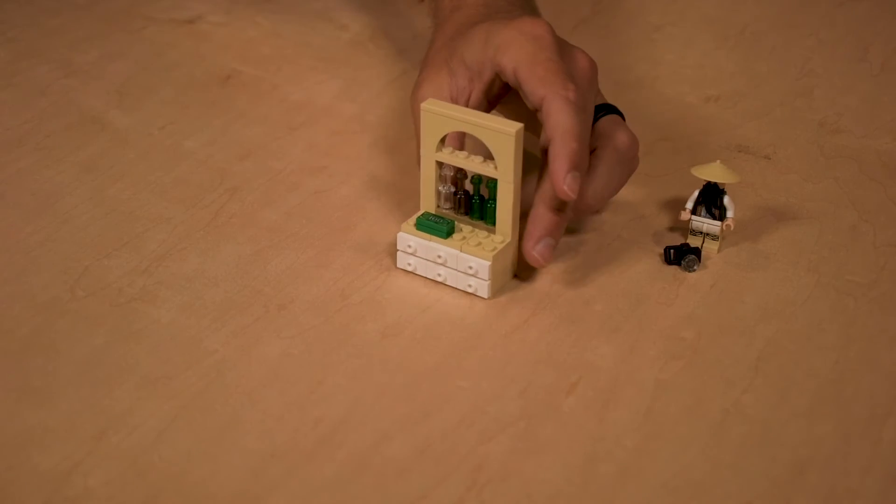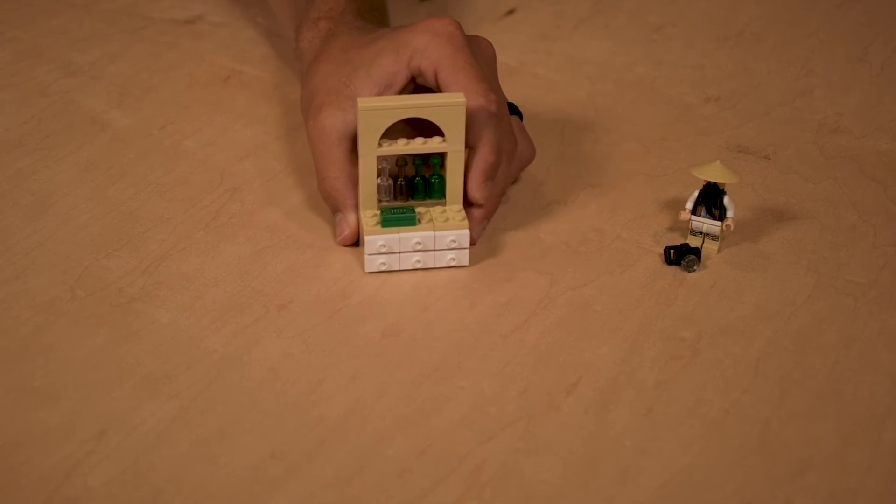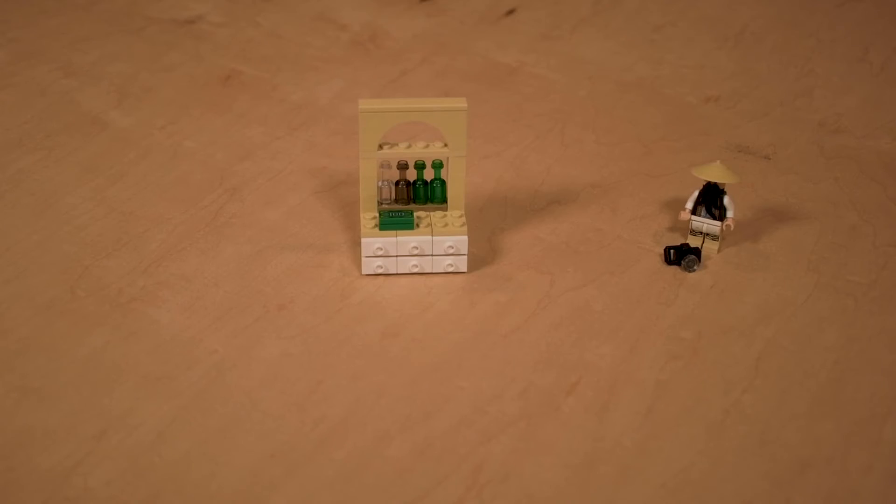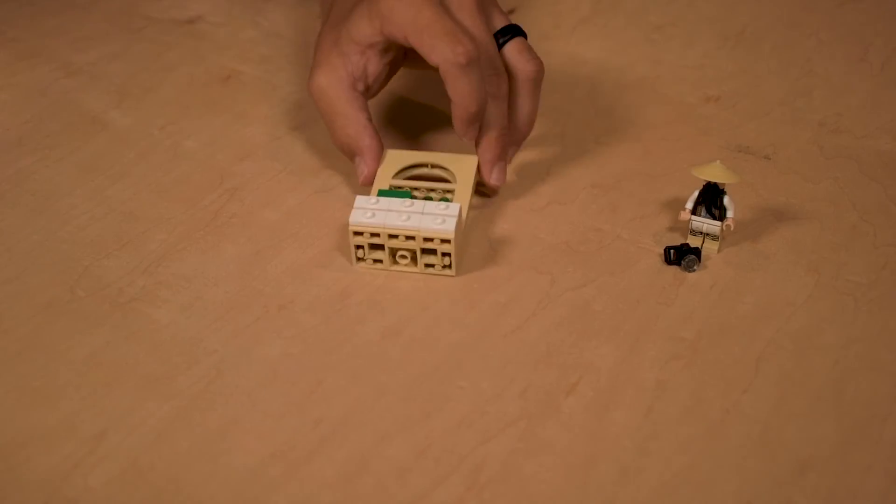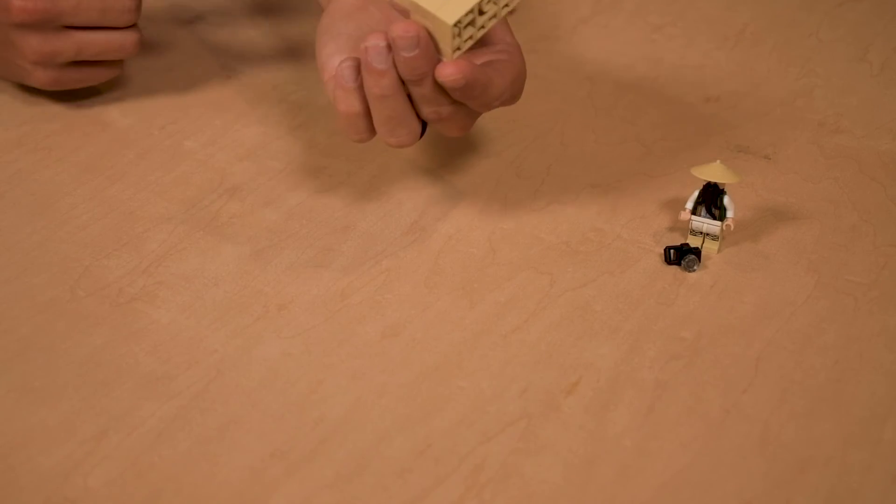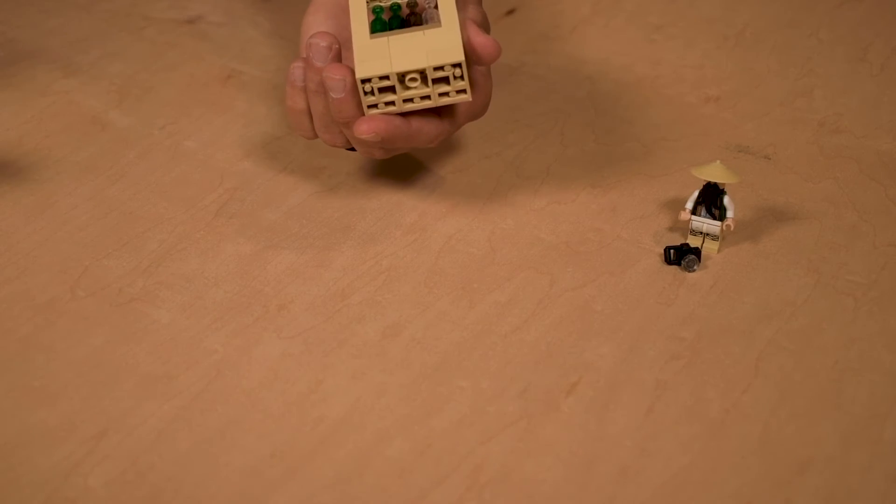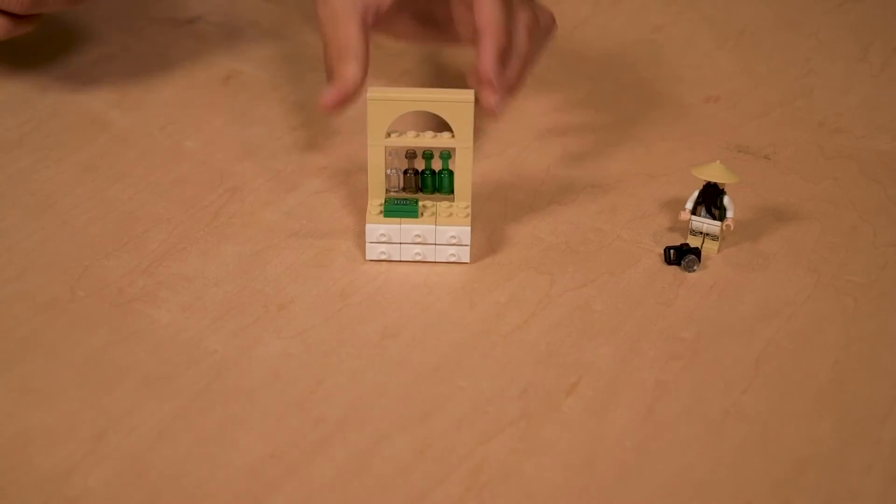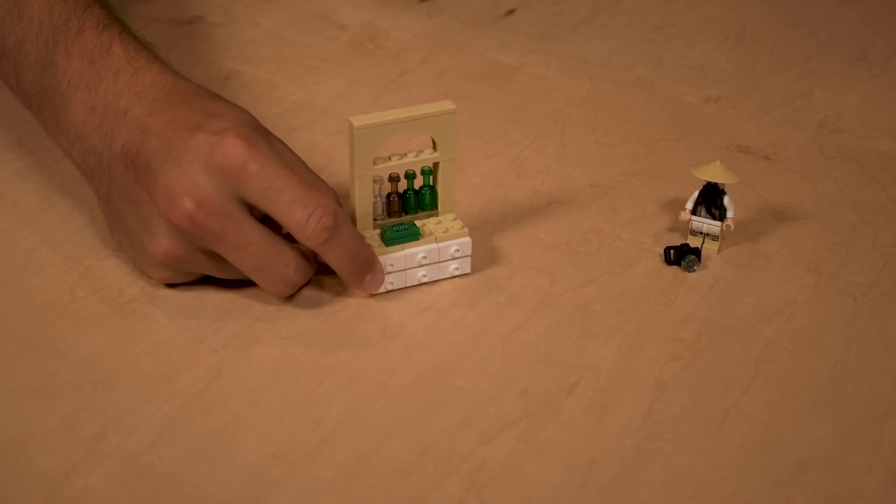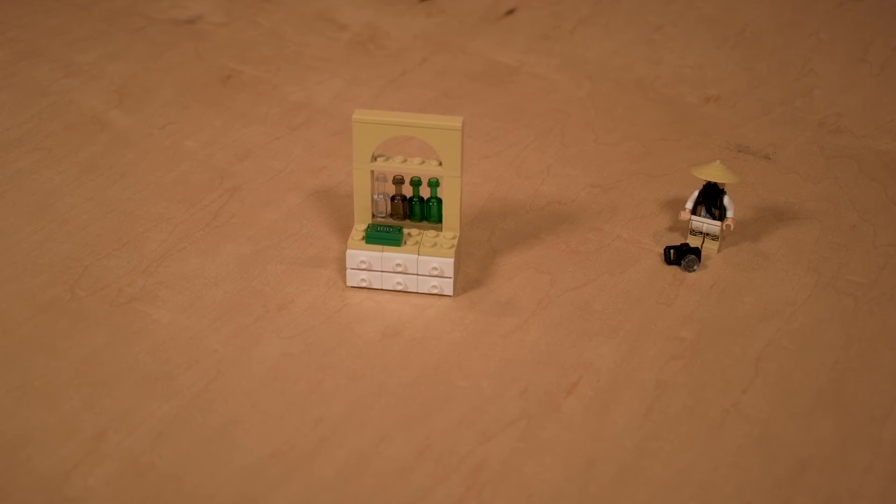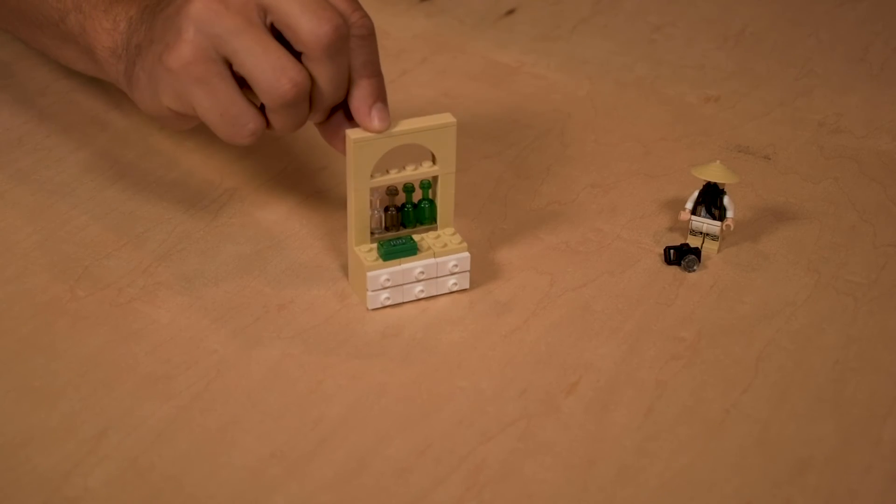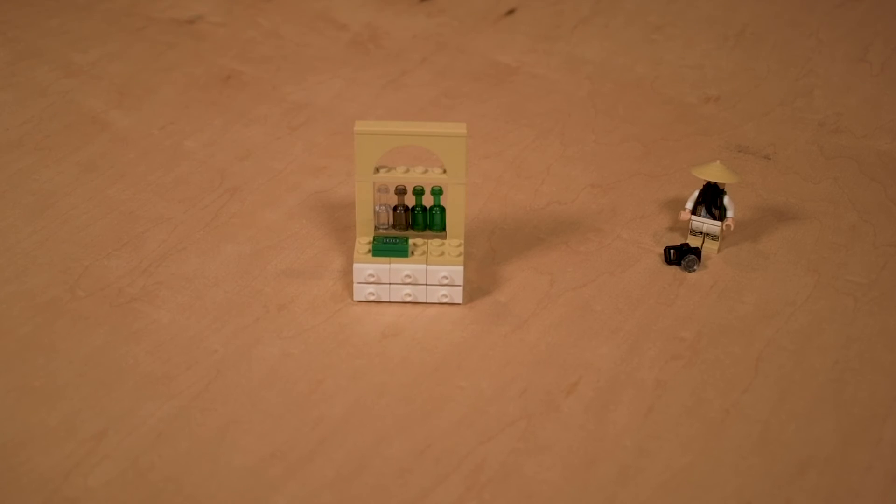And that is it for this build. So that's how you build this little hutch. Like I said guys, this is not the most efficient way to build the base, but work with what you have always and you can make something awesome. That is it for this build, guys. As I always say, make it your own. If you want to switch up the colors, be my guest.